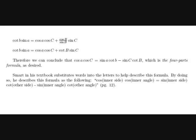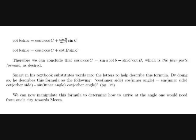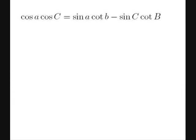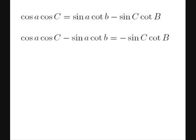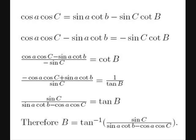Smart, in his textbook, substitutes words into the letters to describe this formula as: cos of the inner side times cos of the inner angle equals sin of the inner side times cotangent of the other side minus sin of the inner angle times cotangent of the other angle. We can now manipulate this formula to determine the angle from any city towards Mecca. Letting uppercase B be our current city, we subtract sin A cot B from both sides, divide by negative sin C, and find that B equals arctan of sin C divided by (sin A times cot B minus cos A times cos C).